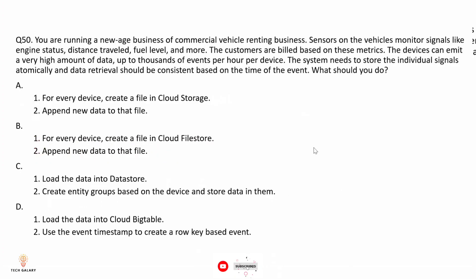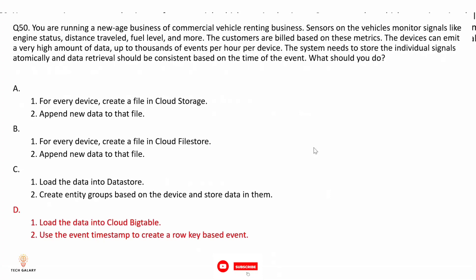Question 50: You are running a commercial vehicle renting business. Sensors on vehicles monitor signals like engine status, distance traveled, fuel level, and more. Customers are billed based on these metrics. Devices can emit up to thousands of events per hour per device. The system needs to store individual signals automatically and data retrieval should be consistent based on the time of the event. The correct answer is option D.